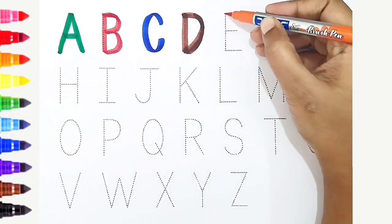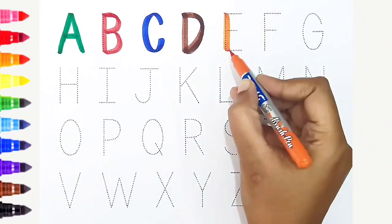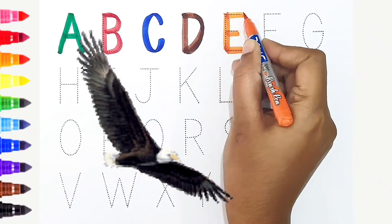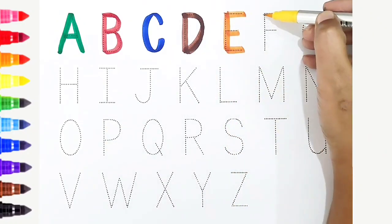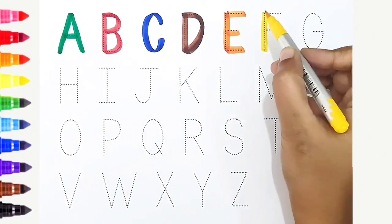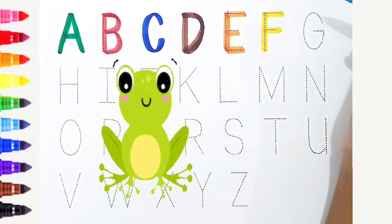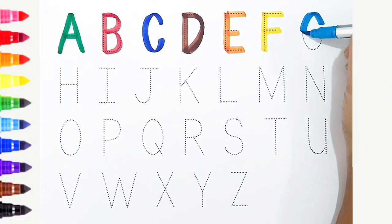E, orange color, E is for eagle. F, yellow color, F is for frog. G, light blue color, G is for gorilla.